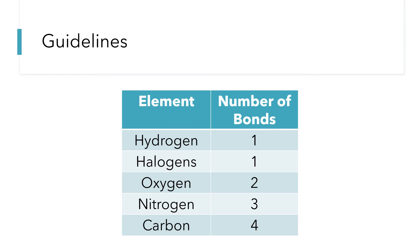These guidelines can also help you do a quick check on whether the structures you're drawing are valid. Hydrogen wants to make one bond. Halogens — chlorine, fluorine, bromine, iodine — when they are outside atoms, want to make one bond. Oxygen will want to make two bonds. Nitrogen will want to make three bonds. And carbon will want to make four bonds. These numbers won't happen 100% of the time, but we'll see them so often that it's a good general guideline.